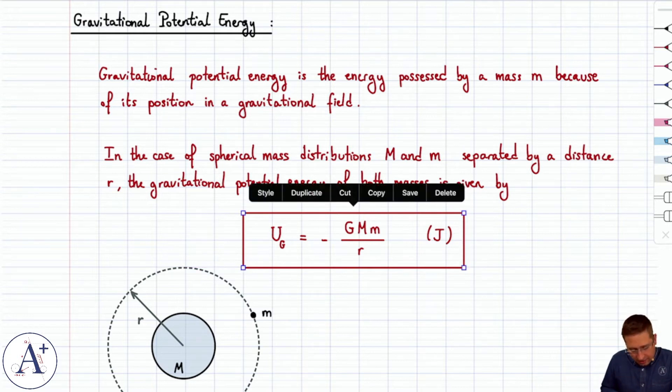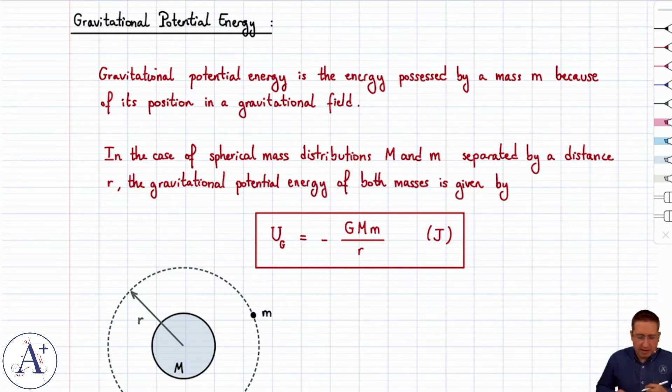Here we have a number, it's a negative number which is a little weird, and it's minus G M little m over r. And that's the potential energy.